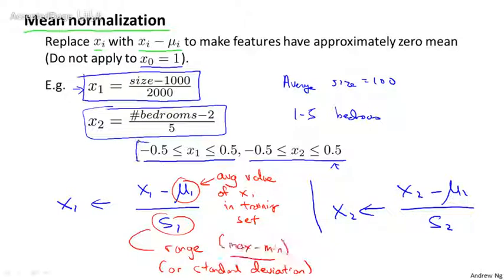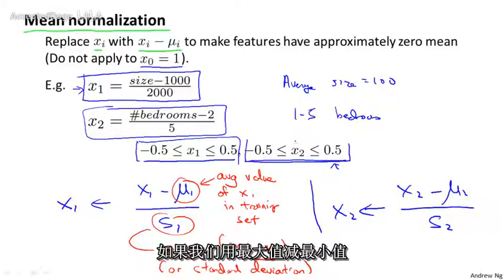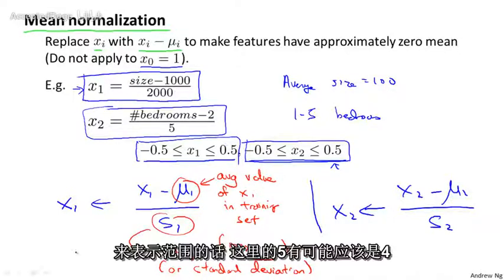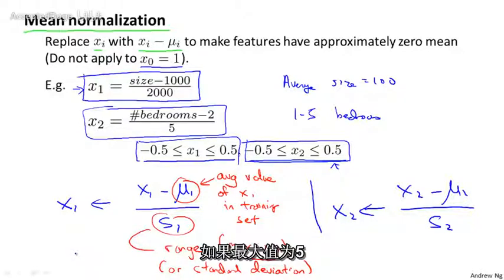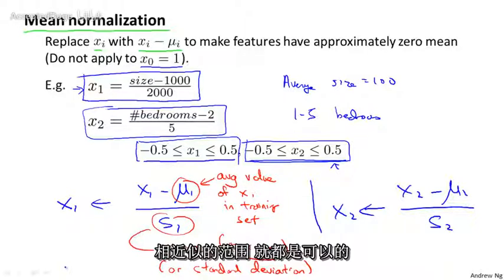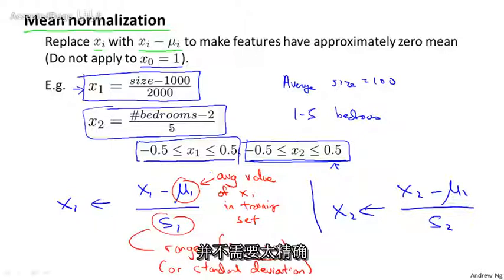And by the way, for those of you being super careful, technically, if we're taking the range as max minus min, this 5 here would actually become a 4. So if max is 5 and min is 1, then the range of bedroom values is actually equal to 4. But all of these are approximate, and any value that gets the features into anything close to these ranges will do fine. And the feature scaling doesn't have to be too exact in order to get gradient descent to run quite a lot faster.